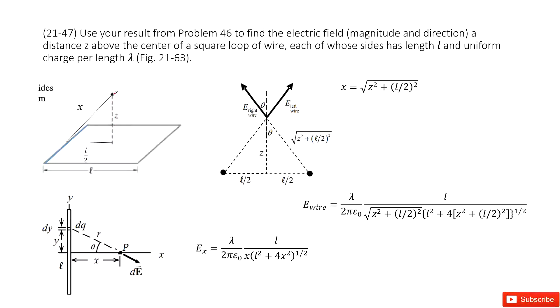That means the electric field E at that point. So it looks like we need to find the electric fields for each of the four wires and then perform vector addition.